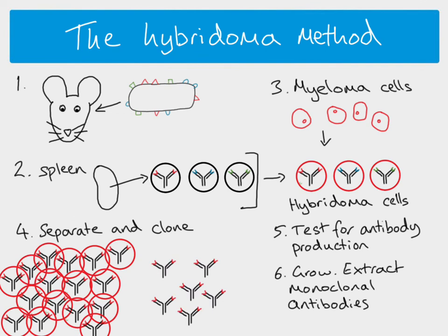We've now produced monoclonal antibodies and have essentially an infinite supply — we can just keep making this particular kind almost indefinitely. Before we can use them for diagnosis and treatment though, there's one final step called humanization. This is because the antibodies originally came from the mouse's immune system, so they're mouse antibodies. They have to be modified so that they are like human antibodies rather than mouse antibodies. It will involve the constant region — this end that attaches to the antigen will not be affected — but something is done at the other end to make them human-like, so that when introduced into humans the body doesn't attack them as foreign.